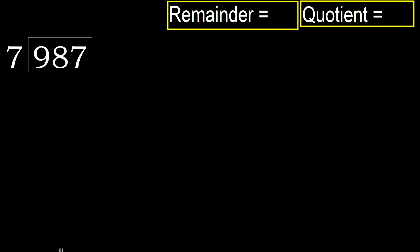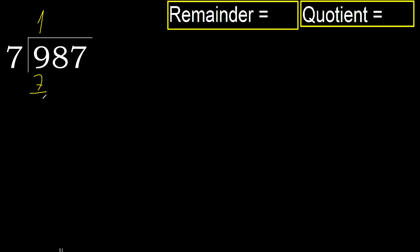987 divided by 7. 9 is not less, therefore start with 9. 7 multiplied by which number is nearest to 9 but not greater? 7 multiplied by 2 is 14 — that is greater. Multiply by 1: 7. It is not greater. Subtract: 9 minus 7 is 2.